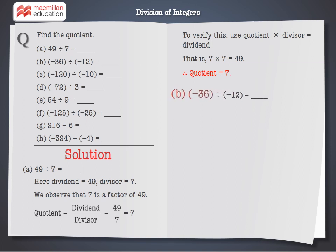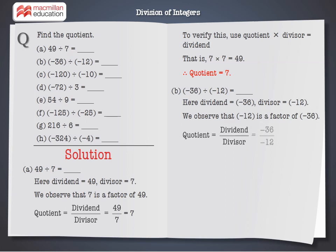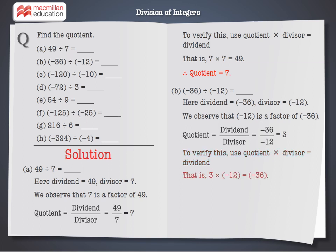B: minus 36 divided by minus 12. Here, dividend is equal to minus 36, divisor is equal to minus 12. We observe that minus 12 is a factor of minus 36. Quotient equals dividend divided by divisor, that is minus 36 divided by minus 12, which is equal to 3. To verify: quotient multiplied by divisor equals dividend — 3 multiplied by minus 12 is equal to minus 36. Therefore, quotient is equal to 3.